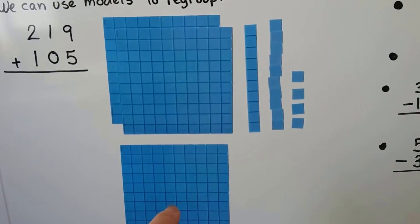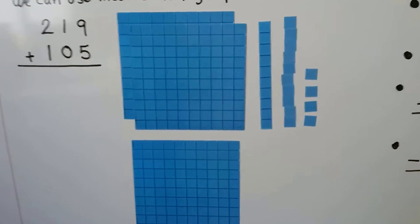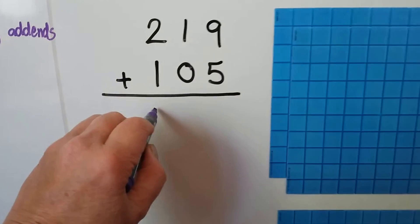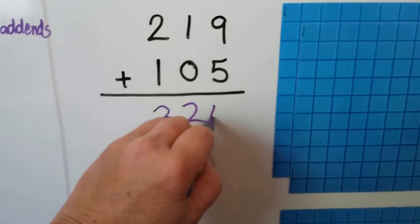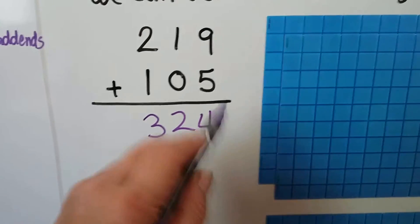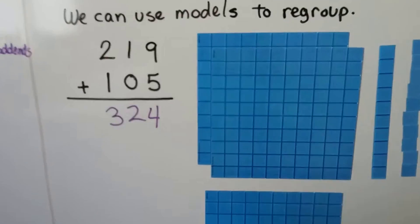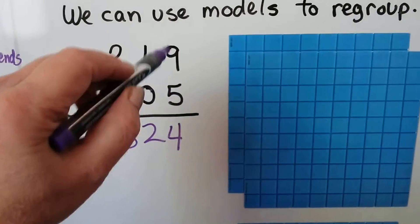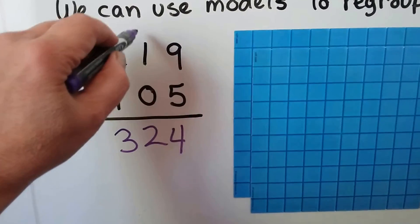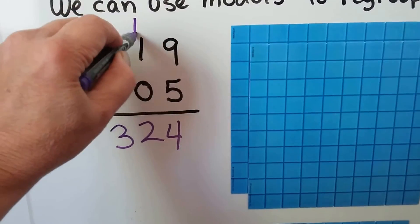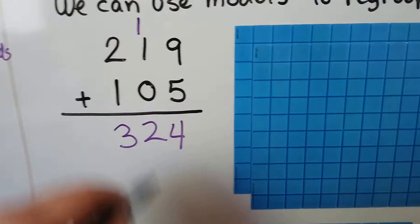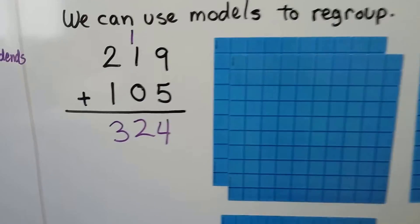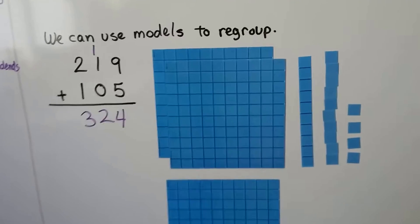Now we have 100, 200, 300, and 24 - that's 324. We also could have used pencil and paper and regrouped the five plus nine as 14, put the four down, regrouped the one, and then added the two ones. We could have done it that way - we could use models or pencil and paper.